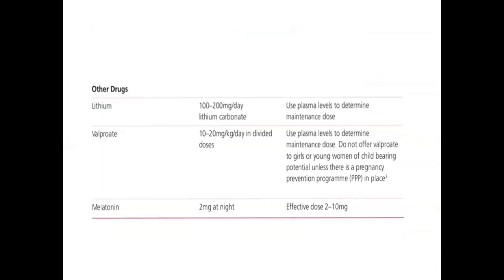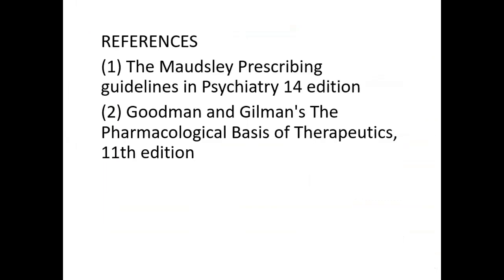Lithium: 100–200 mg per day of lithium carbonate — use plasma level to determine maintenance dose. Valproate: 10–20 mg per kg per day in divided doses. Melatonin: 2 mg at night; effective doses 2–10 mg. My reference is the Maudsley Prescribing Guidelines in Psychiatry, 14th edition, and Goodman and Gilman's The Pharmacological Basis of Therapeutics.